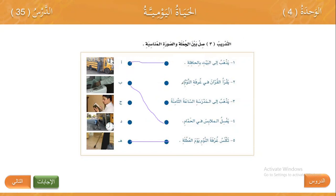يقرأ القرآن في غرفة النوم — هذا هو الاختيار. يذهب الى المدرسة الساعة الثامنة — هذا هو الاختيار. بهذه الطريقة نصل الجملة بالصورة المناسبة — In this way we match the sentence with the appropriate picture.